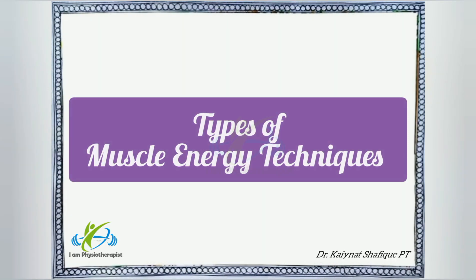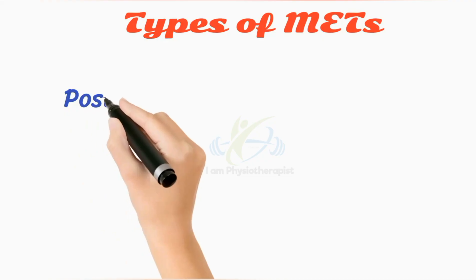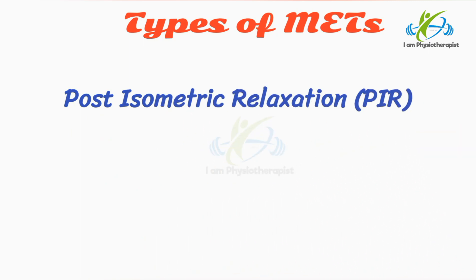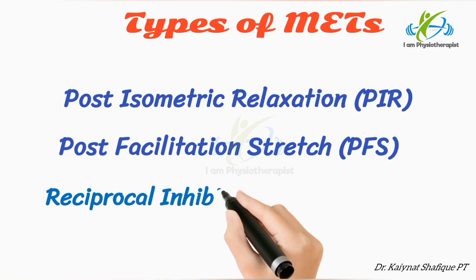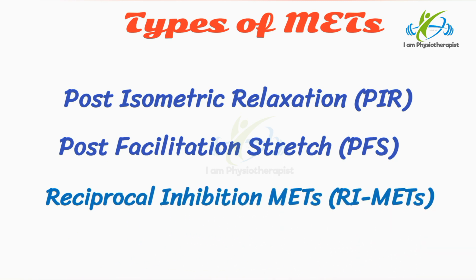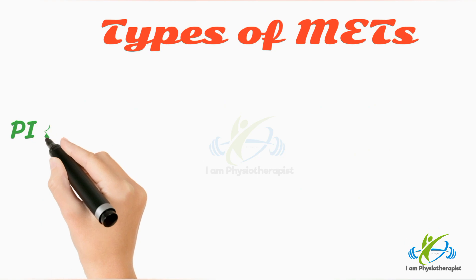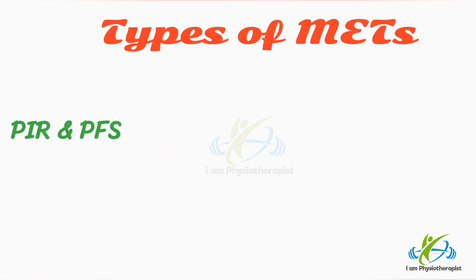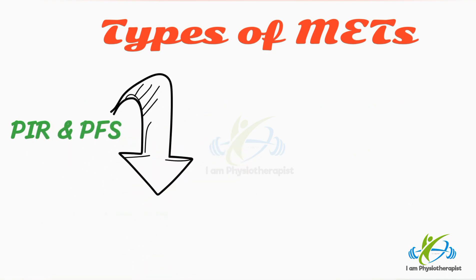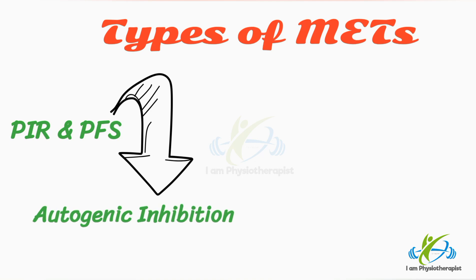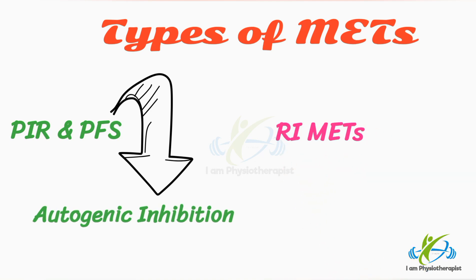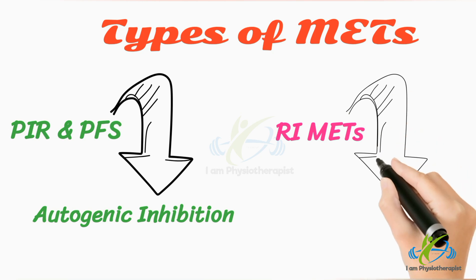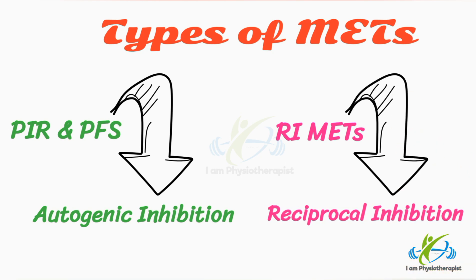Types of muscle energy techniques include post-isometric relaxation, post-facilitation stretch, and reciprocal inhibition METs. Post-isometric relaxation and post-facilitation stretch techniques work on the principle of autogenic inhibition, while reciprocal inhibition METs works on the principle of reciprocal inhibition.